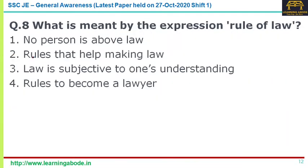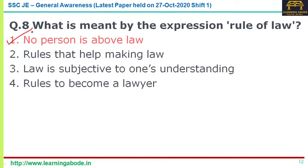Question number eight: what is meant by the expression 'rule of law'? Option four is 'rules to become a lawyer,' option three is 'law is subjective to one's understanding,' option two is 'rules that help making law,' and option one is 'no person is above law.' The answer is option one — no person is above law; everyone is equal in front of the law.